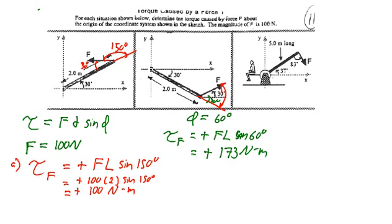And then we move on to the third situation, and again if I extend the rod and I want to find the angle between the rod and that force, it's going to be 180 minus 83 degrees, so that's going to be equal to 97 degrees.